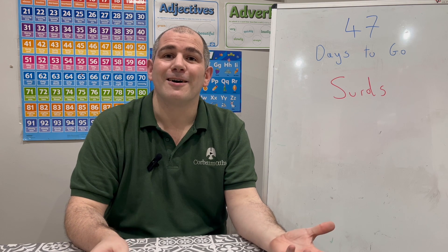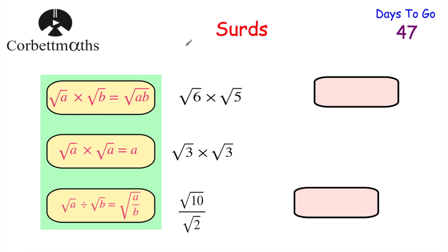Let's get started. Here's our first rule: if we've got root A multiplied by root B, that's equal to root AB. So for instance, if we had root 6 multiplied by root 5, we'd just do 6 times 5 which is 30, so that'll be the square root of 30, or root 30.